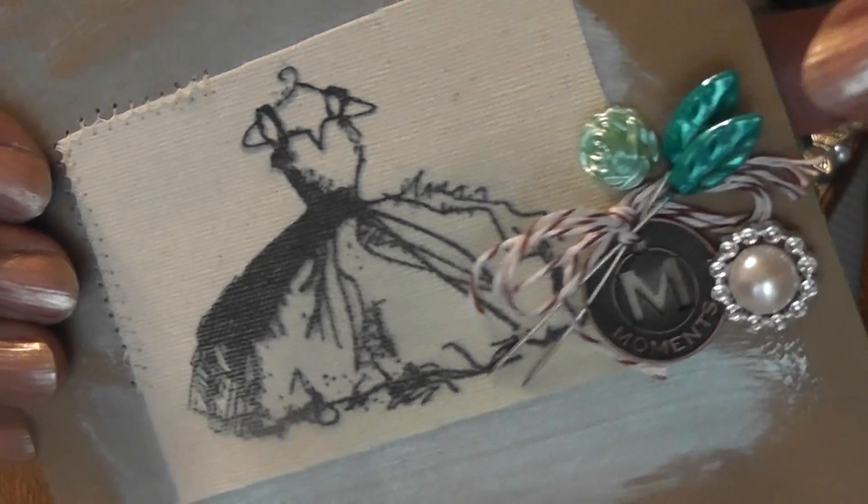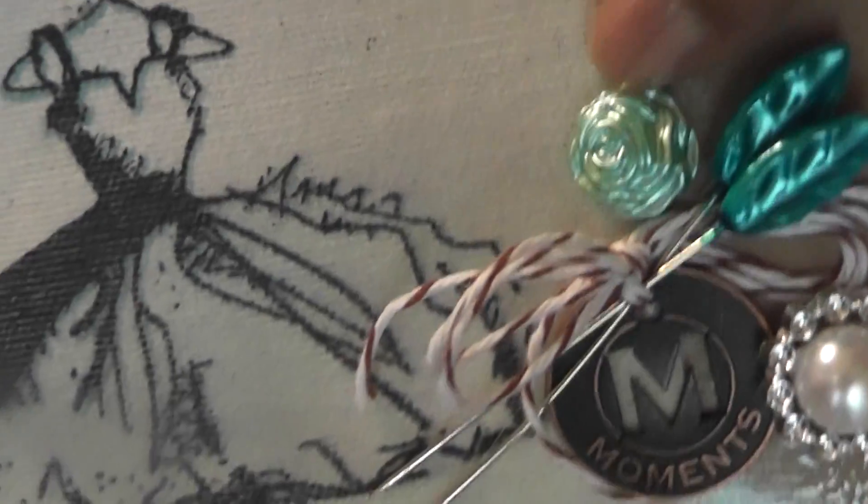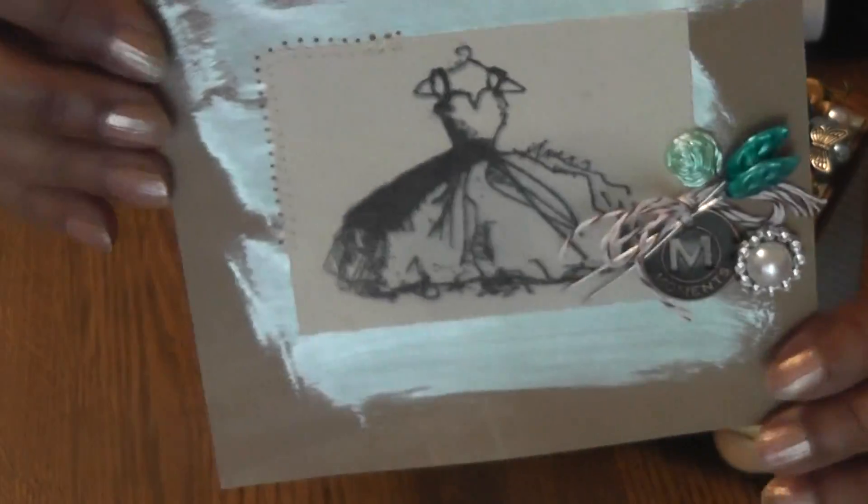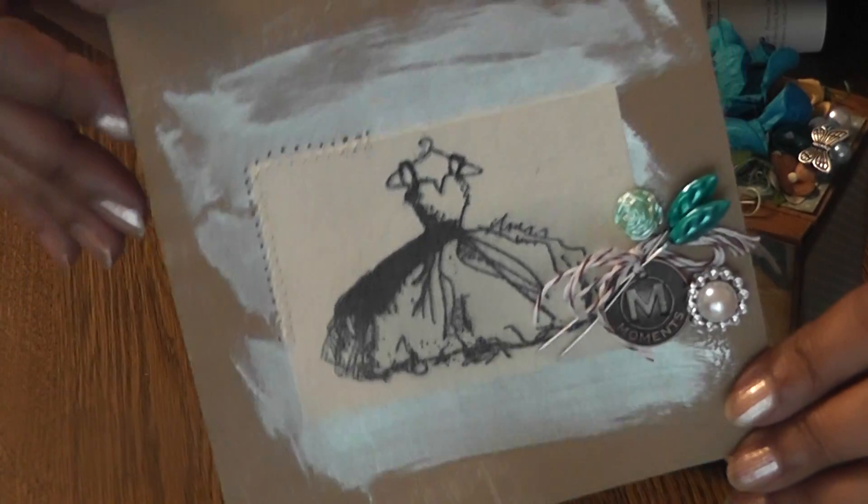These are two little leaf stick pins. I have a little resin piece here with a rose. And I added some twine in brown.